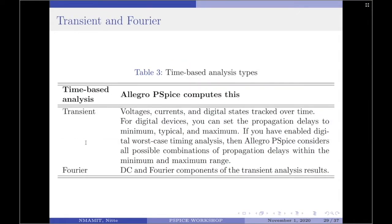If the type of the analysis is transient and Fourier, these time-based analyses evaluate circuit performance in response to time-varying sources. Table 3 summarizes what the Allegro PSPICE calculates for each time-based analysis type. If the type is transient, then the Allegro PSPICE computes voltages, currents, and digital states tracked over time. For digital devices, you can set the propagation delays to minimum, typical, and maximum. If digital worst case timing analysis is enabled, the Allegro PSPICE considers all possible combinations of propagation delays within the minimum and maximum range. If the type is Fourier, then the Allegro PSPICE computes DC and Fourier components of the transient analysis results.